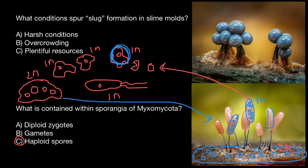Our answer to the first question — what conditions spur slug formation in slime molds — is answer A: harsh conditions. And this is all for today. Subscribe and see you in the next video. Goodbye.